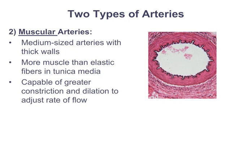The second type are muscular arteries, sometimes called distributing arteries. These are medium-sized arteries with very thick walls — in particular a thick muscular layer and thick tunica externa of connective tissue. They have less elastic tissue than elastic arteries but more smooth muscle, making them capable of greater constriction or dilation of the lumen. This regulates blood flow throughout the vessels and helps regulate blood pressure.